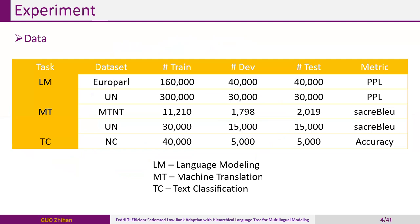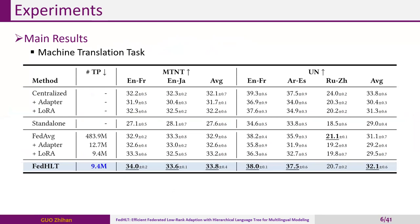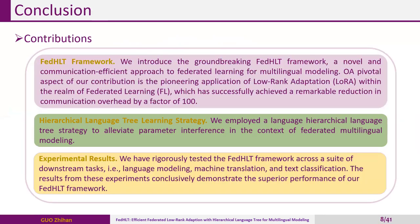This table shows the datasets in our experiment. We present the main experimental results across three downstream tasks: the language modeling task, machine translation task, and text classification task.